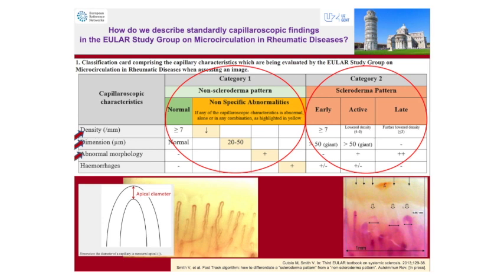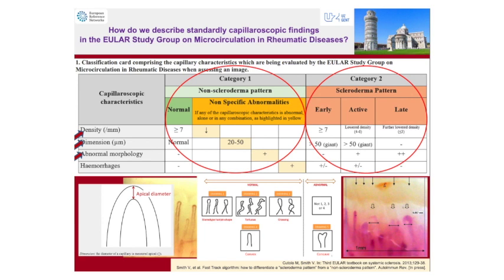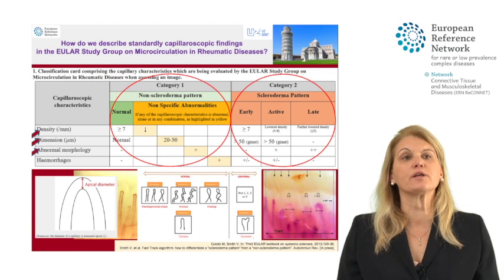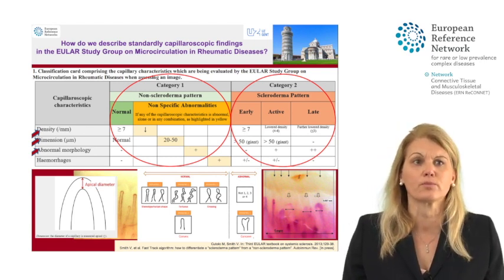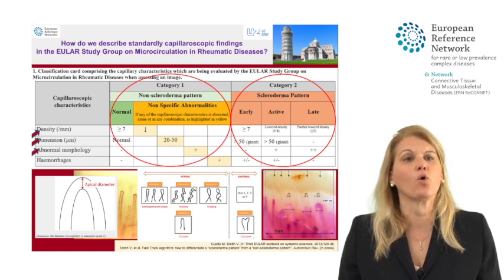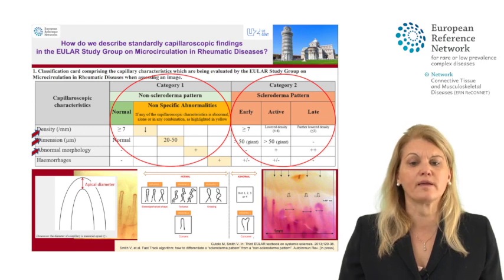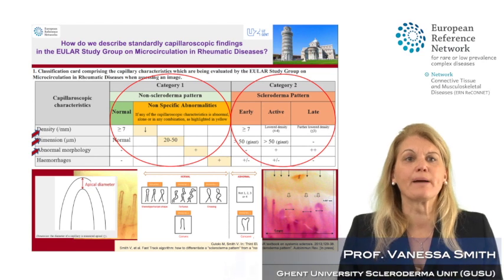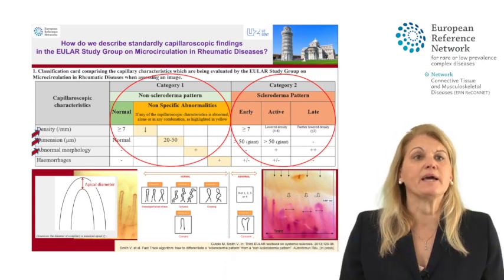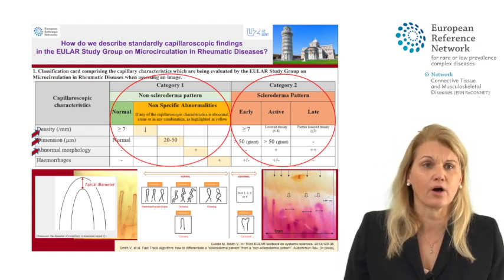Thirdly, we always evaluate the single shapes or morphology of capillaries. Based on consensus and landmark studies such as the study of Andrade, the stereotypically normal shapes are: the hairpin shape, the torturous shape — where lines bend but don't cross — or the crossing shape. All other shapes are called abnormal shapes. We have seen with the EULAR study group that categorizing into normal or abnormal shapes has the highest reliability when also adding the criterion of convexity of the tip. So for a capillary to be called normal morphology it must be hairpin, torturous, or crossing, and also have a convex tip.